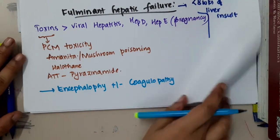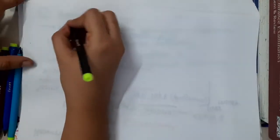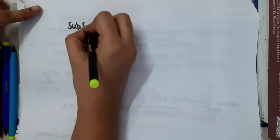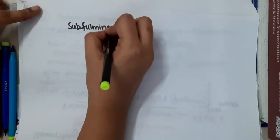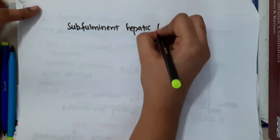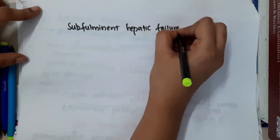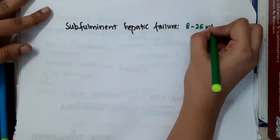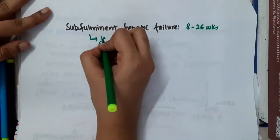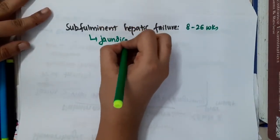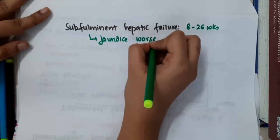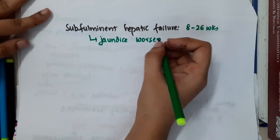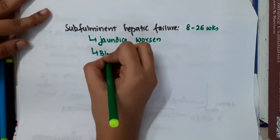Then we also have sub-fulminant hepatic failure. What is sub-fulminant hepatic failure? Sub-fulminant hepatic failure is seen in 8 to 26 weeks. In sub-fulminant hepatic failure, the jaundice will worsen and bleeding will also be present.